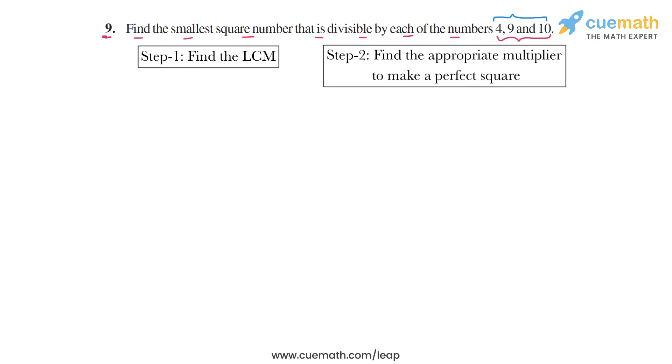In the first step, we have to find the LCM of 4, 9, and 10. So we write the prime factors form of each number. 4 is equal to 2 into 2, 9 is equal to 3 into 3, and 10 is equal to 2 into 5.